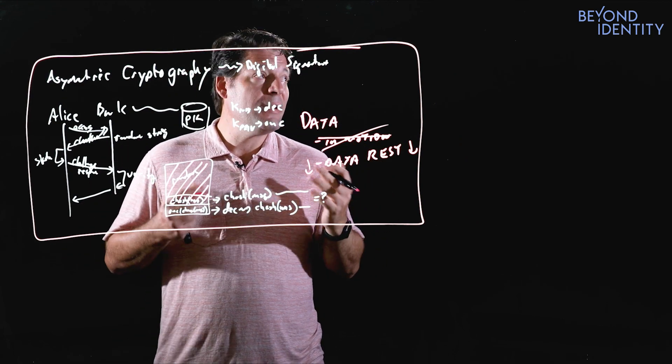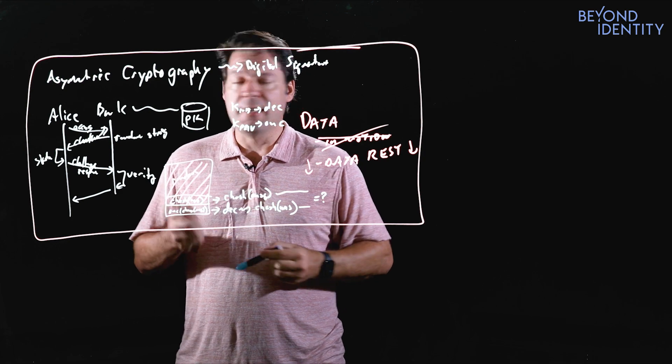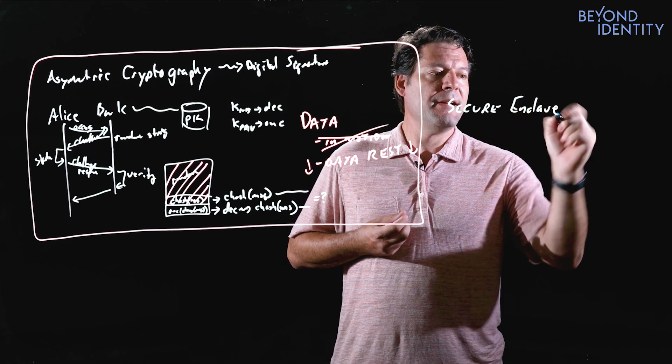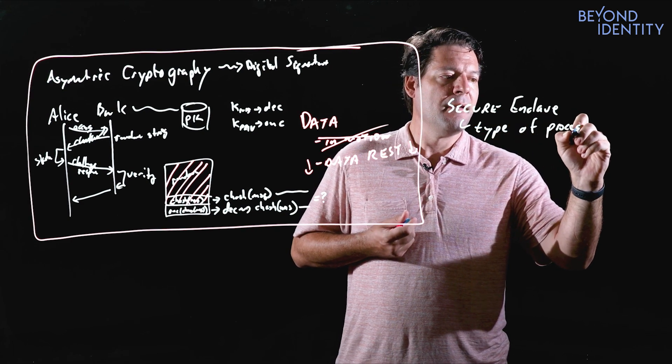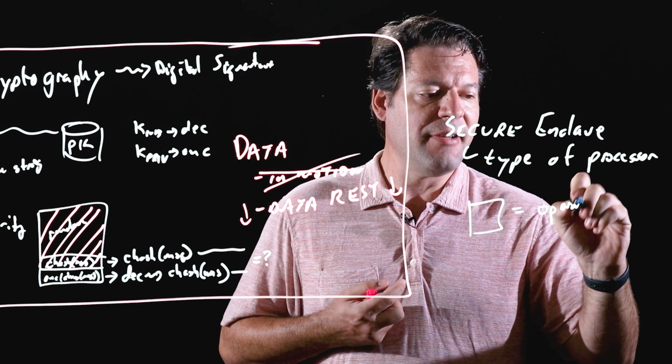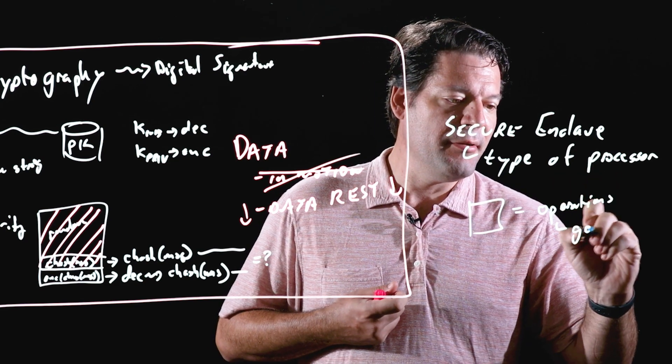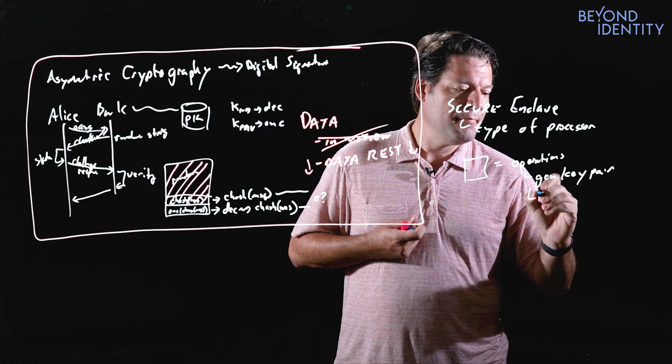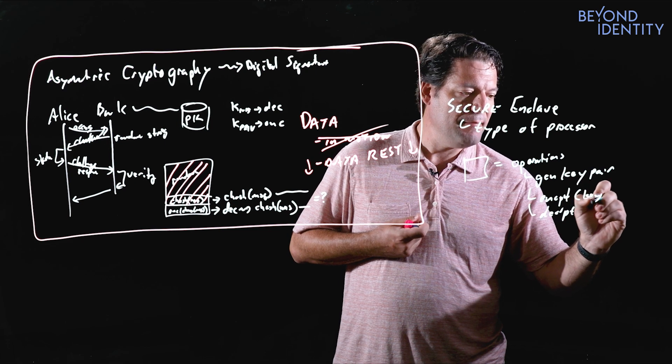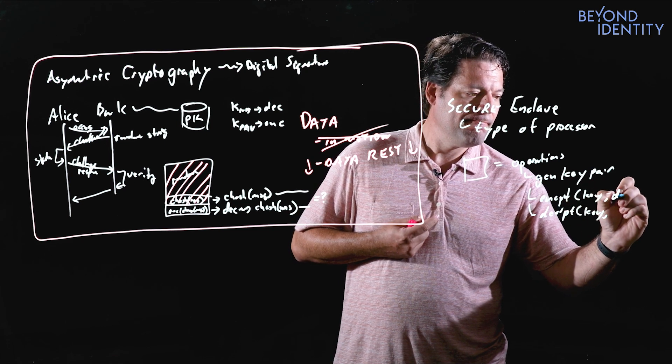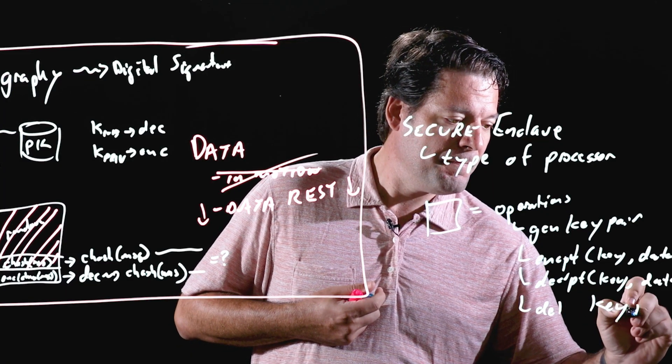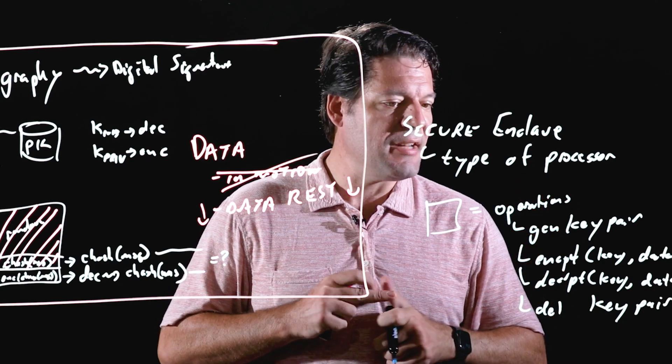And that's what we're going to work on now. So how do we guarantee this thing doesn't move? And for that, we're going to introduce this concept of a secure enclave. So a secure enclave is, you can think of it as a type of processor. You kind of have to think of it as literally its own little chip. And it may have a limited set of operations. The operations may be generate key pair, encrypt, decrypt. Obviously, you have to give it a key and some data stream. Obviously, delete key pair.